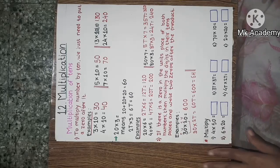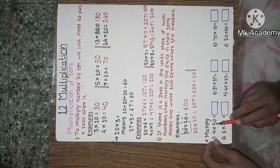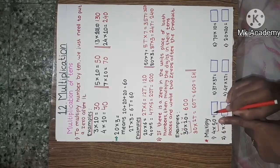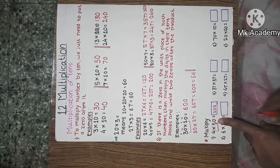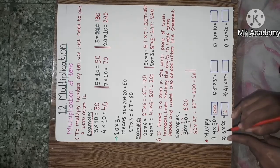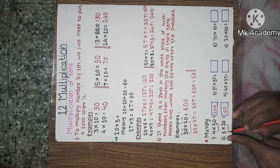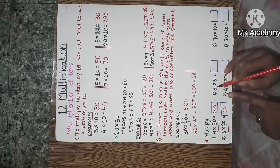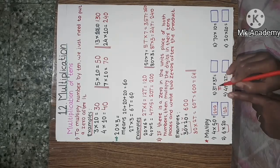Now some examples on these properties. First example: 4 into 50. We multiply — 4 fives are 20 — and then write 0. Next: 6 into 20 — 6 twos are 12 — then write 0. The answer is 120, so 6 into 20 is equal to 120.